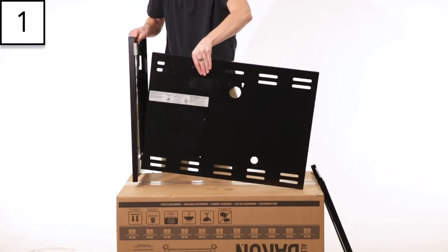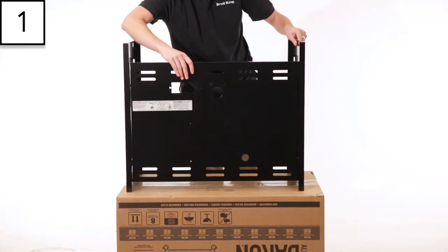Step 1. Align the two side panels with the rear panel. Slide the rear panel into place and tighten the four screws with your screwdriver.